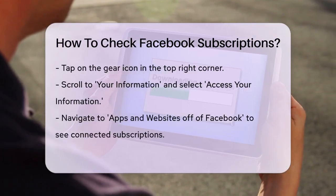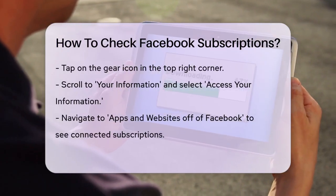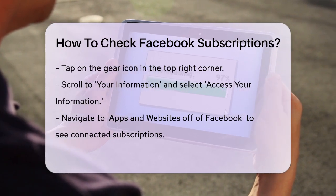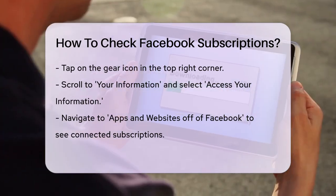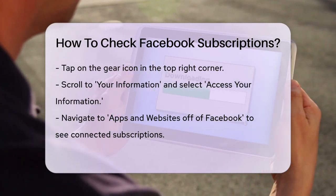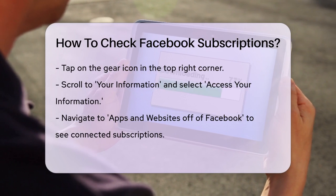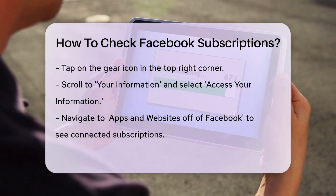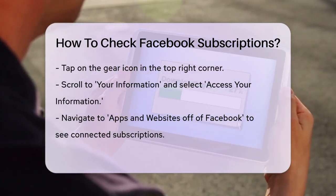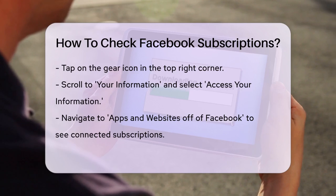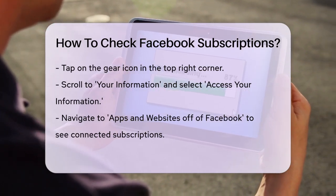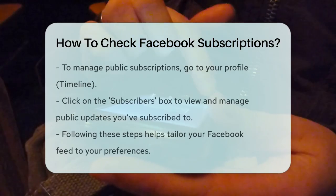If you're looking to manage your connected subscriptions, such as services or apps linked to your Facebook account, the process is slightly different. You'll need to go back to the menu, tap on the gear icon in the top right corner, and then scroll down to the Your Information section. Here, tap on Access Your Information, and then navigate to Apps & Websites off of Facebook. In this section, you'll find the list of your connected subscriptions.